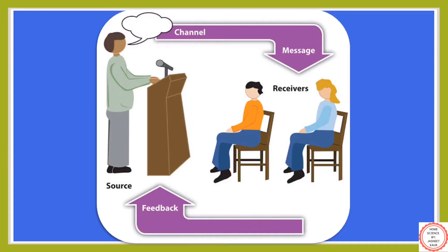In this picture, you can see one person standing on the podium to pass some information. That person is the source or sender. He is passing the message through a channel. Channel is considered as the physical mode of transmission through which the message will be passed on to the receiver. Here in this picture, the channel is the mike.